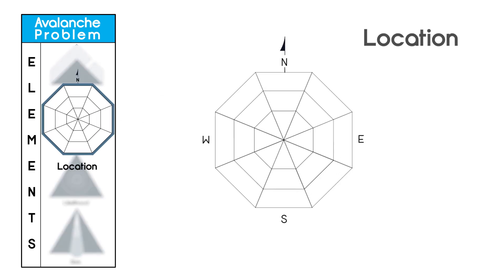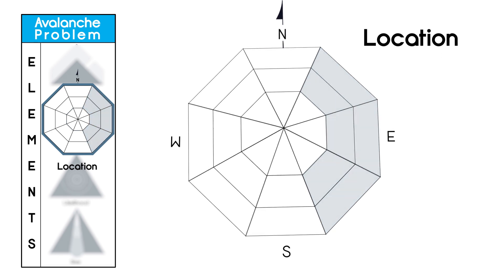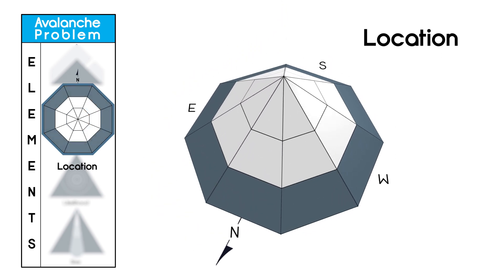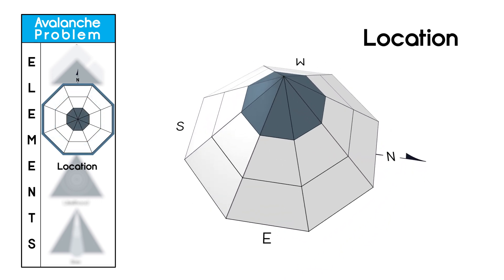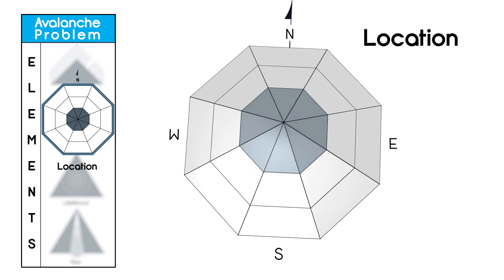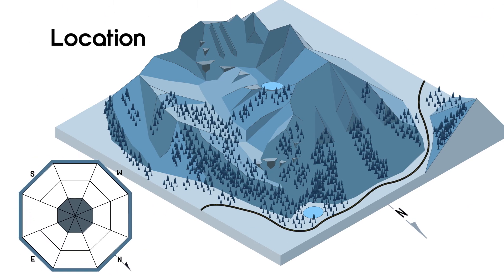Aspect elevation diagrams depict where these avalanches are most likely to be found. Picture this diagram as a mountain. The outer ring represents lower elevations, and the uppermost ring represents the upper elevations. These diagrams are not a map and are not meant to be used as such. Rather, they are an idea of how the pattern of avalanche conditions may have developed. In this case, the diagram shows the forecaster expects avalanches on all aspects at upper elevations.